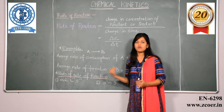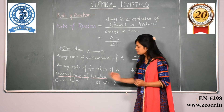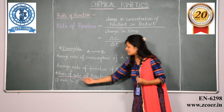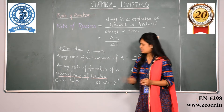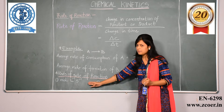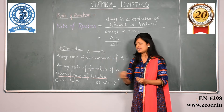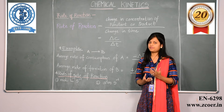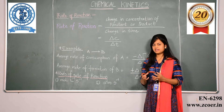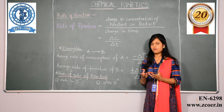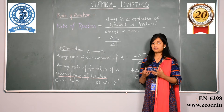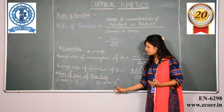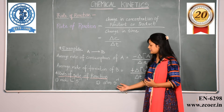Now let us look at the units of rate of reaction. If the concentration of the reactant or the product is in litres, the unit of rate of reaction is moles per litre per second, because concentration is represented by moles per litre and S is the unit of time. If the reactant or product is in gaseous form, the concentration is represented in atmospheres, so the rate of reaction is atmosphere per second.